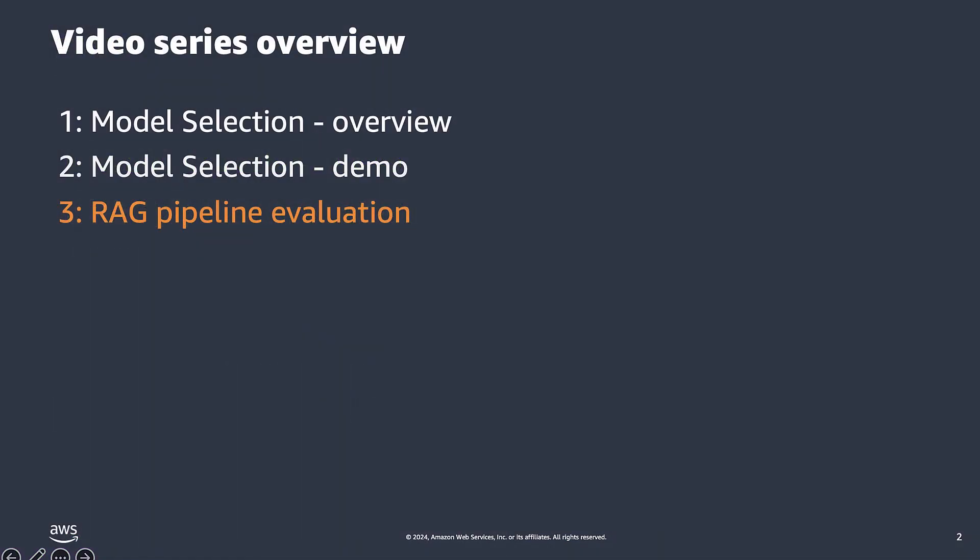This is video three in our series. In videos one and two, we provided an overview of how to choose the right large language model for your use case. In this video, we will be covering how to evaluate an LLM system involving an LLM, an embedding model, and a vector store, and we will be covering appropriate metrics for each.